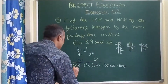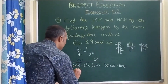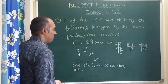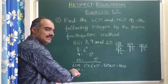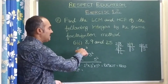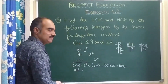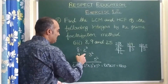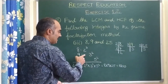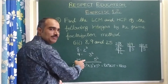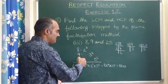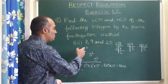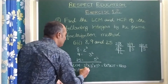Let us now see the HCF. H stands for highest, but we should take the least powers. 2 power 3, and here nothing, nothing. Nothing means, children, remember it is 2 power 0. You just imagine like that — nothing in the sense means 2 power 0.